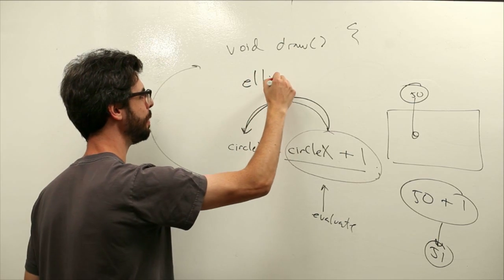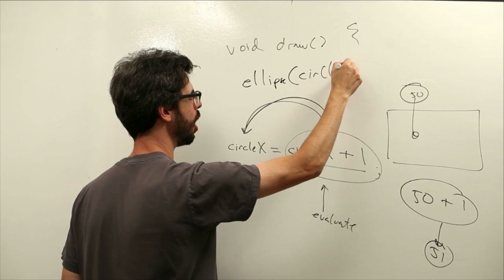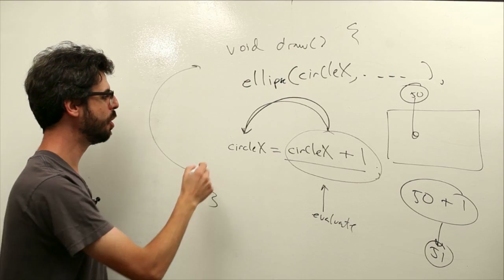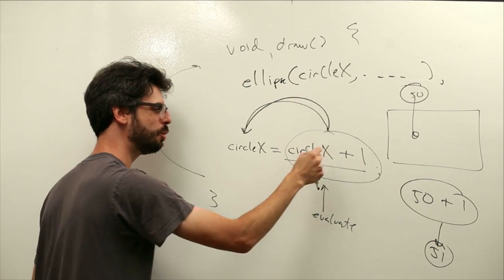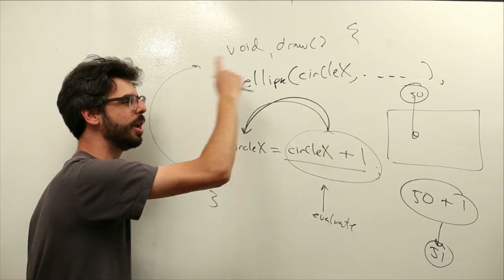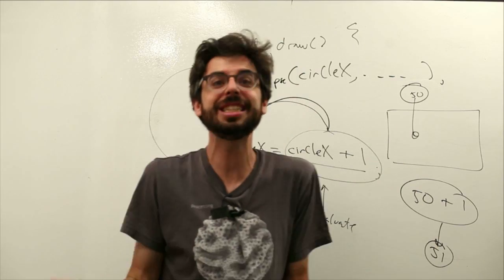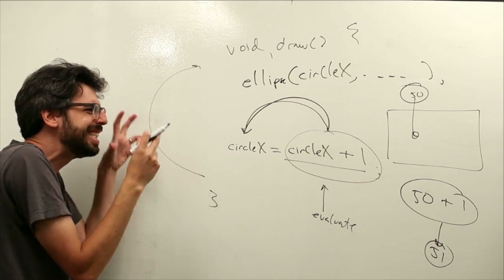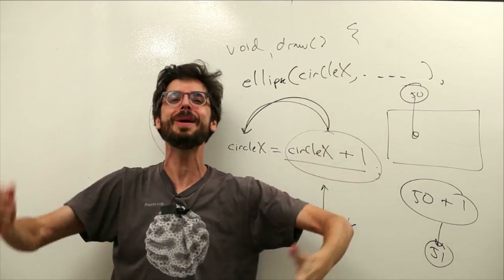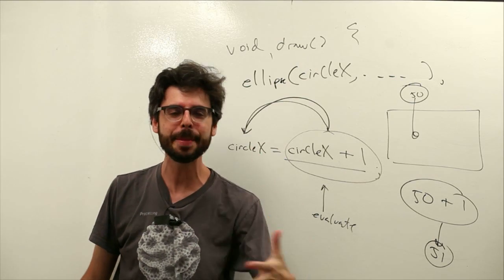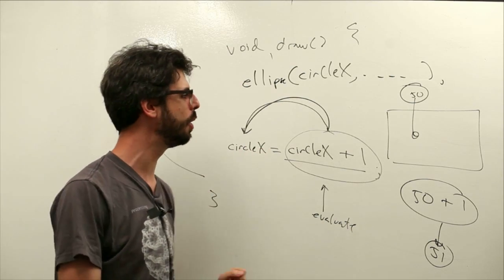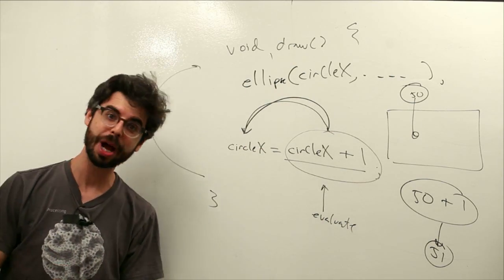If at the beginning of draw we are drawing an ellipse at circle x, then we come back and draw it at 51, then increment that by 1 — 51 plus 1 is 52 — then we come back and draw it at 52, then increment that by 1. This is the process. All it's doing is moving a circle left to right, but this is the foundation of everything. It's coming up with an algorithm — the logic behind what you're doing and implementing that through code.